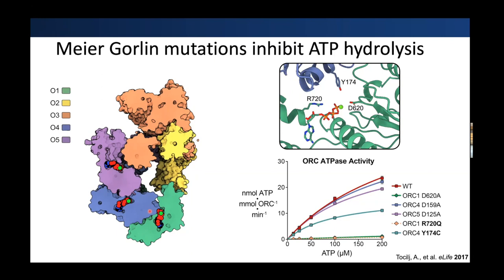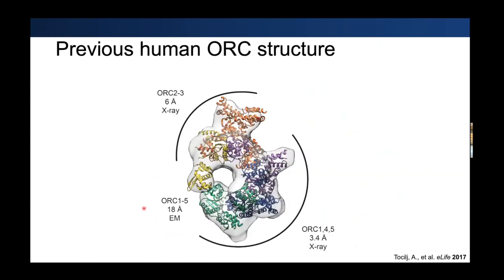There are some interesting aspects at this ORC1 ATP site still under investigation. In addition, our lab solved the human ORC structure using X-ray crystallography and electron microscopy. We determined structures of ORC2 and 3, and ORC1, 4, and 5, which were fit into an electron density map of slightly low resolution. I recently joined the lab after this paper was published, and a task was to further improve the quality of this structure through cryo-EM.